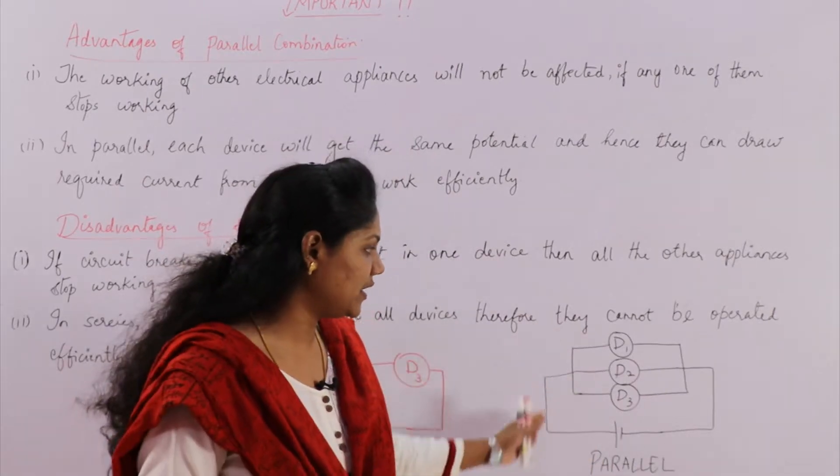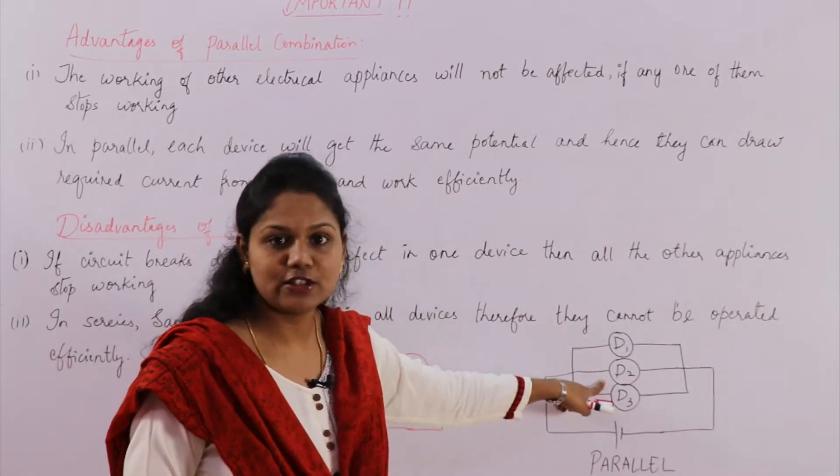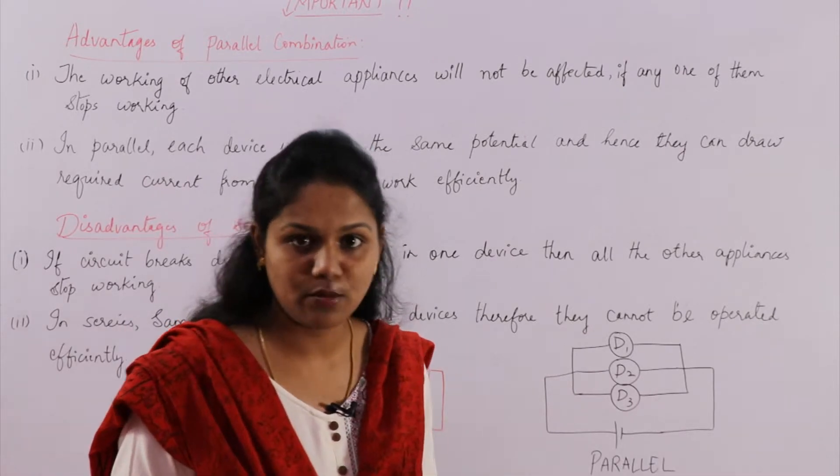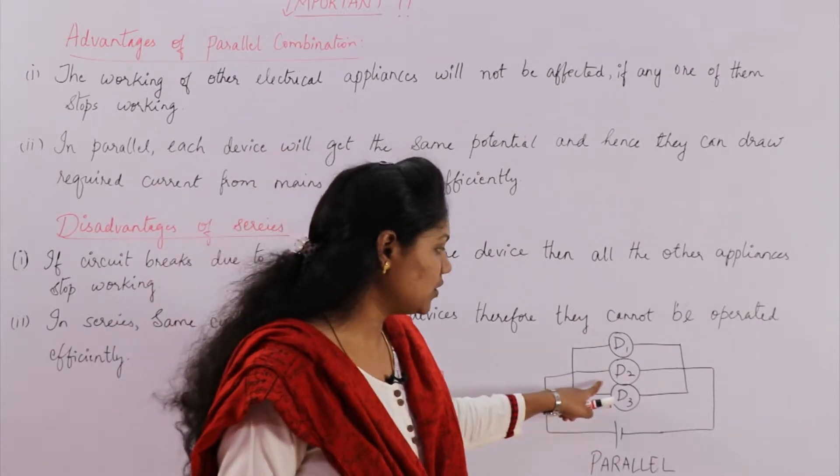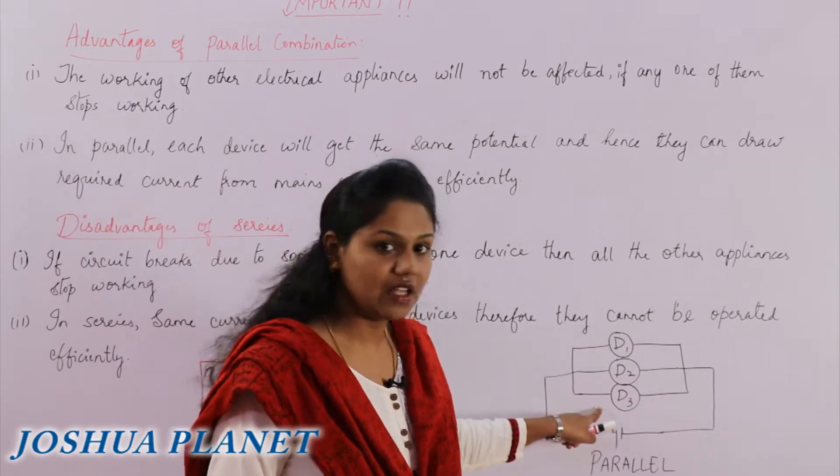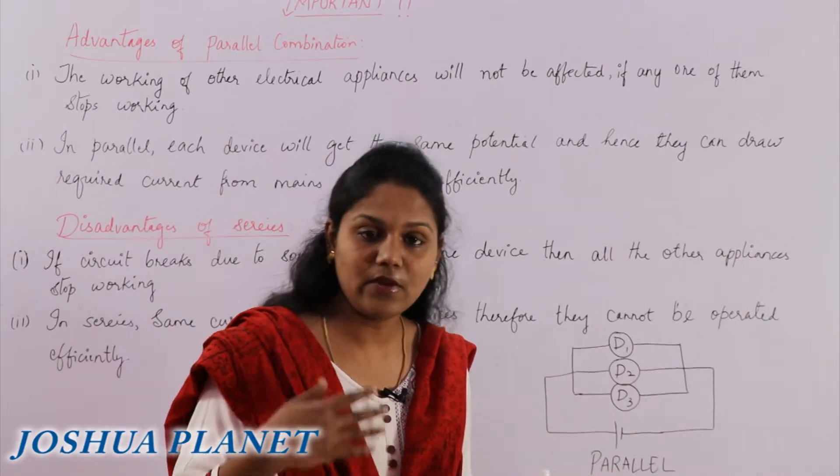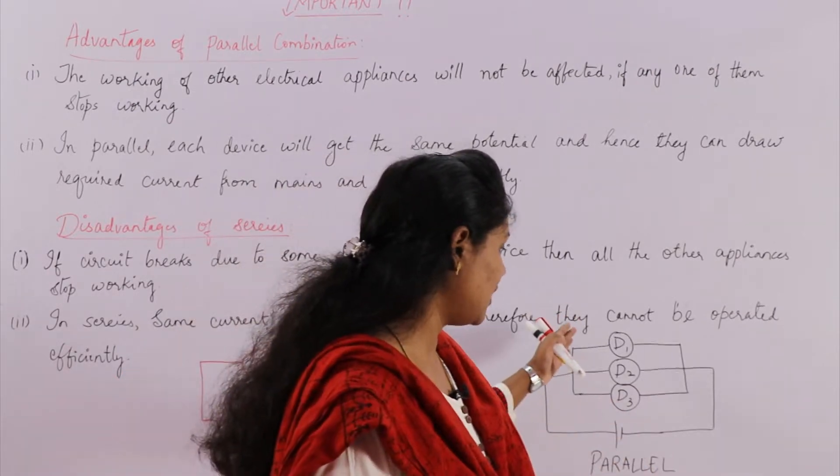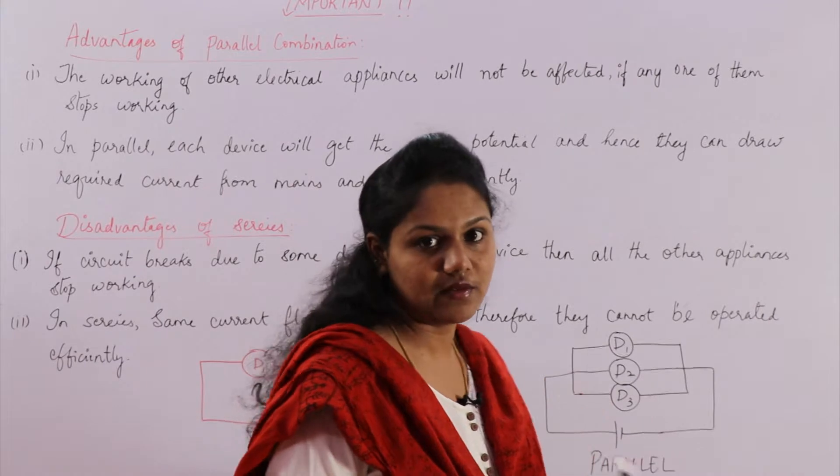So now if you take in parallel combination, say suppose device two got breakdown. So the device two is not working properly. So because device two is not working properly, device one and device three will not be affected. They will run as is, right? So there will be no effect on device one and device three.